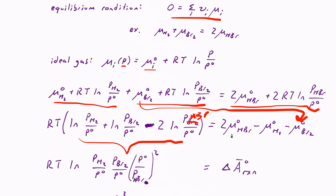On the right side I have twice μ°(HBr) minus μ°(H₂) minus μ°(Br₂). Remember that chemical potential is the partial molar free energy. So this is the difference between the partial molar free energies of products minus those of the reactants at standard state conditions — that is, the change in molar Helmholtz free energy for this reaction under standard state conditions, written as ΔA°(rxn).